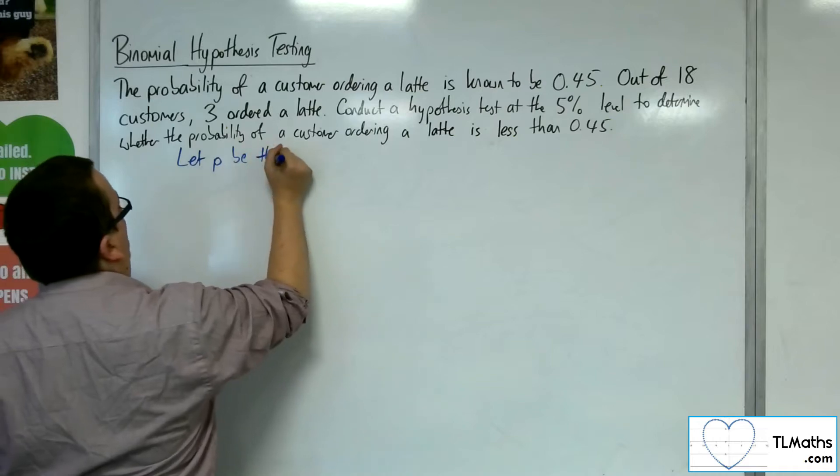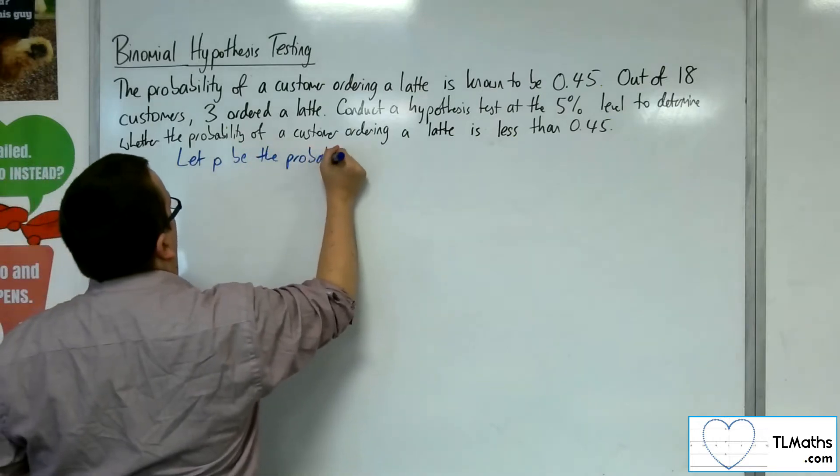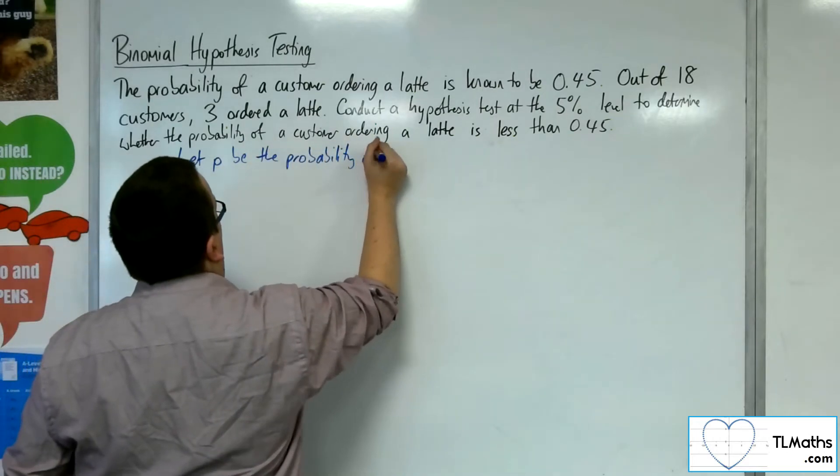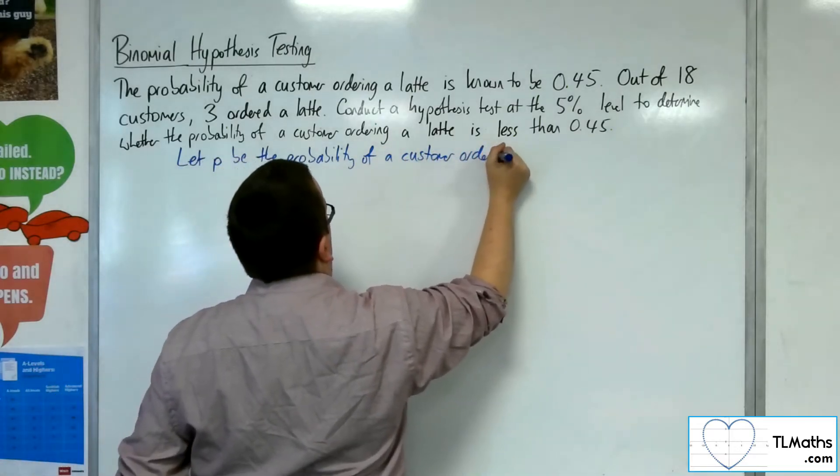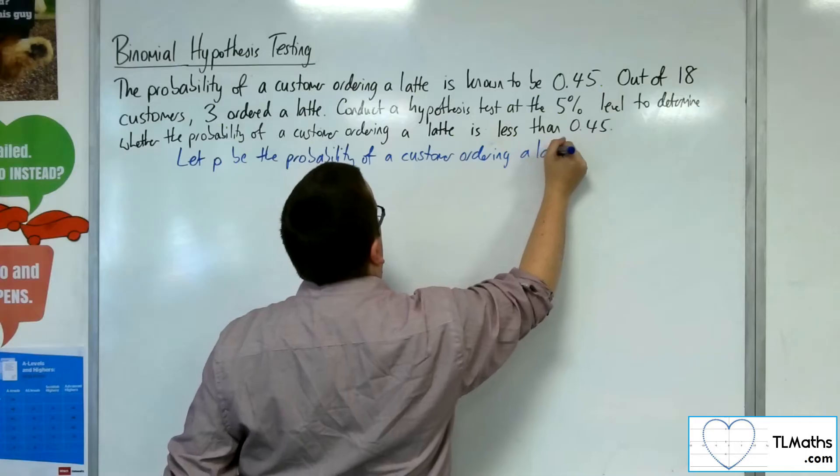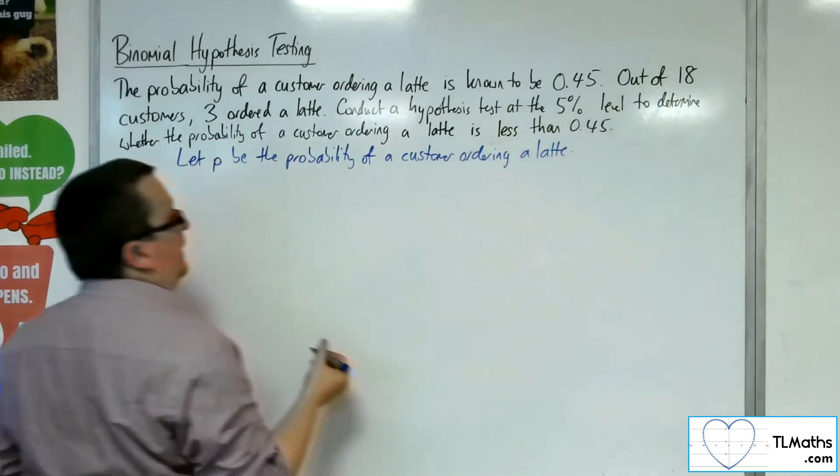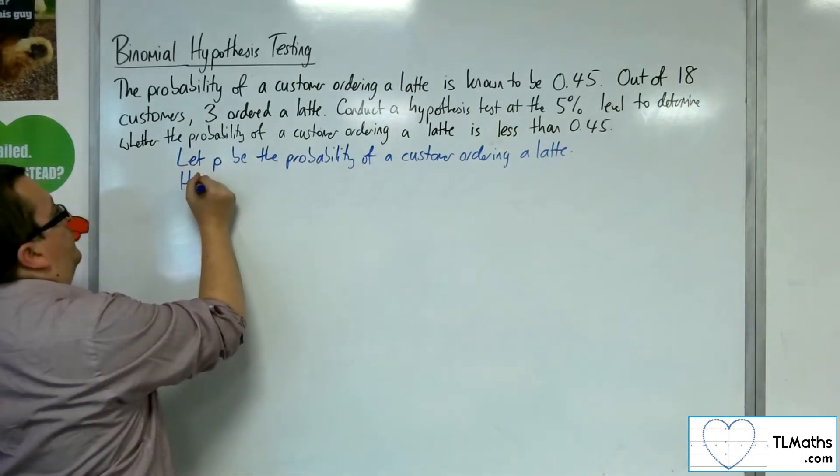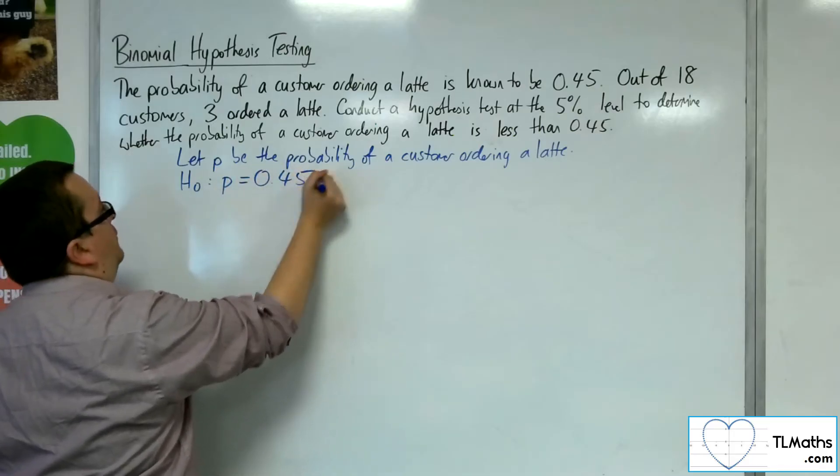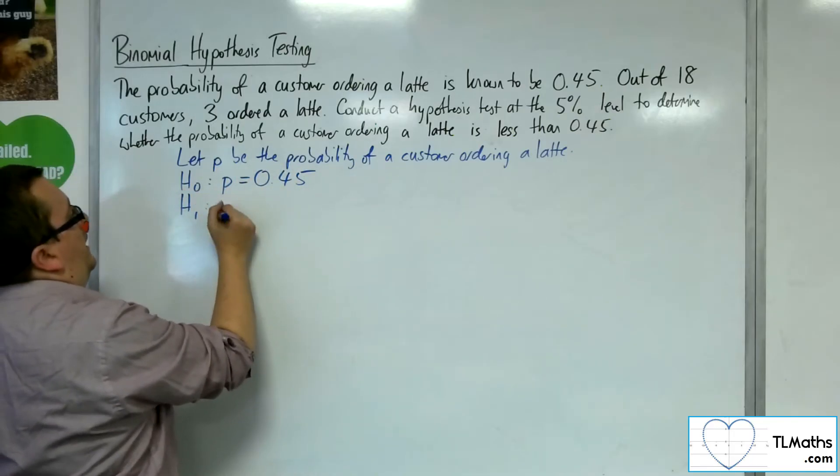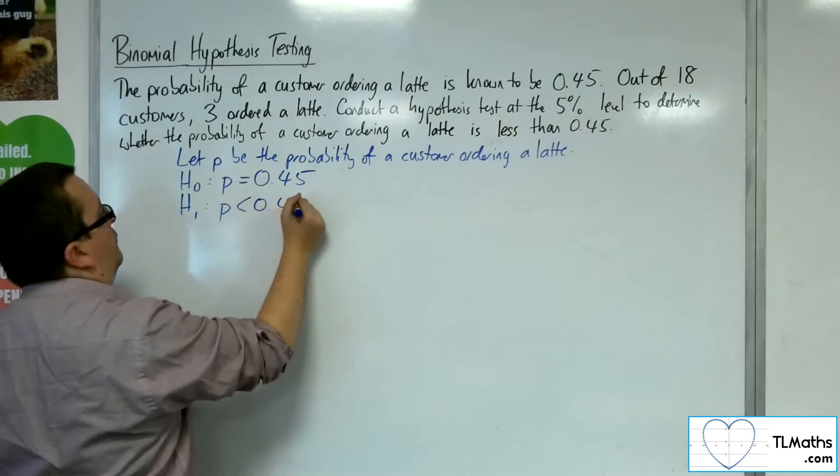Let P be the probability of a customer ordering a latte. H0 is that the probability is 0.45, and the alternative hypothesis is that the probability is less than 0.45.